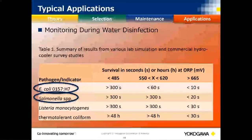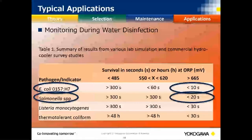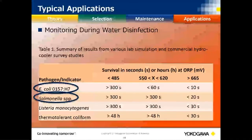Water disinfection is another application. ORP can be used in the disinfection of water — normally a critical step in minimizing transmission of pathogens. Studies have determined that maintaining a certain ORP value for a certain time kills specific pathogens. This applies not just to drinking water purification systems but also to industrial washing machines using ORP for disinfection.